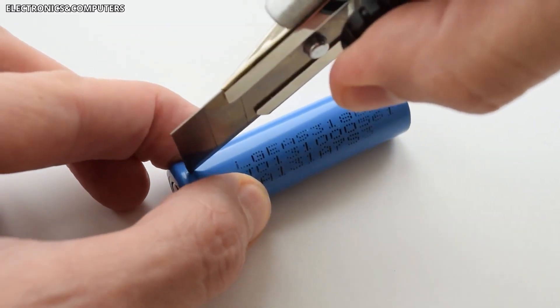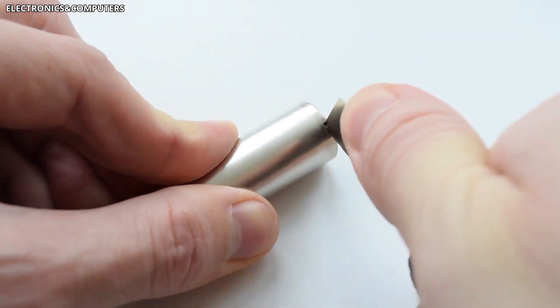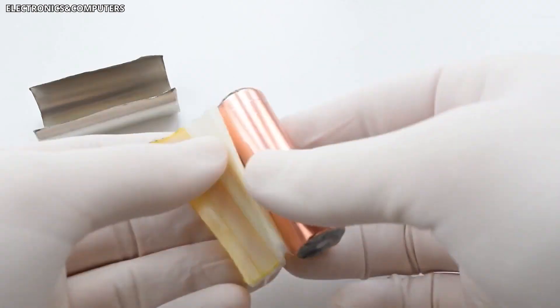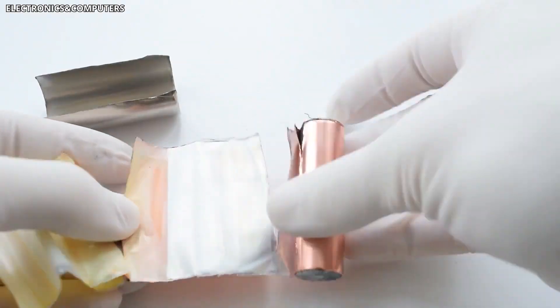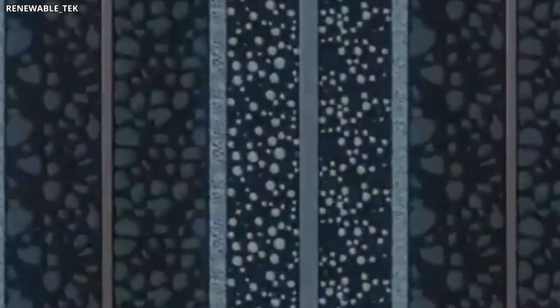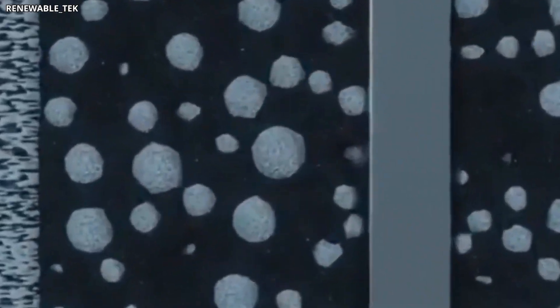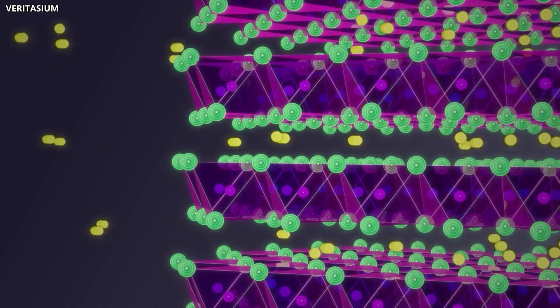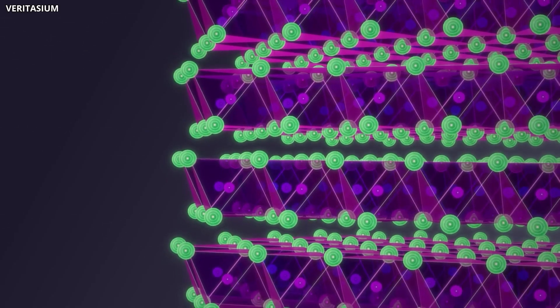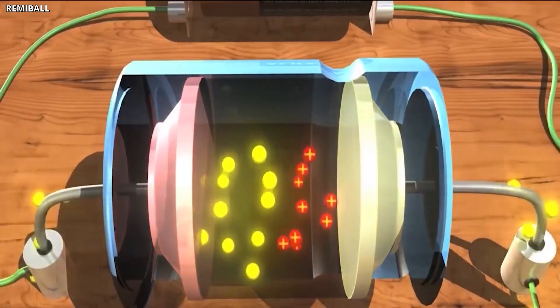In a typical lithium-ion battery, the anode is made of graphite, which is just stacked layers of graphene. But those layers don't conduct as well as single-layer or few-layer graphene. By using separated graphene sheets, you increase the surface area and improve how fast ions can move in and out. That speeds up charging and discharging.